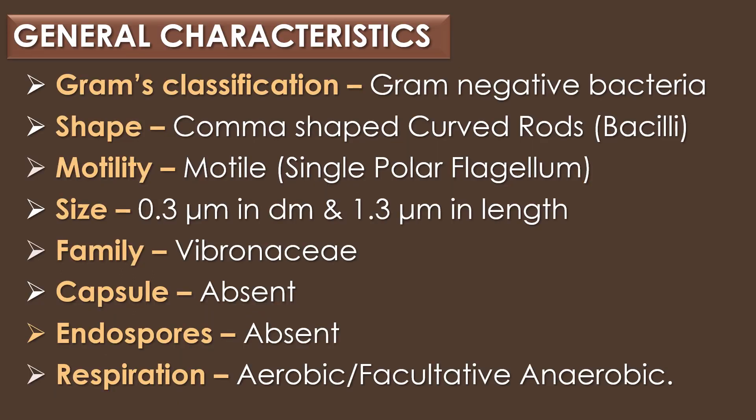First, general characteristics of Vibrio cholerae. Vibrio cholerae is a gram-negative, comma-shaped curved rod and it is motile in nature due to the presence of a single polar flagellum. The size of Vibrio cholerae is 0.3 micrometre in diameter and 1.3 micrometre in length. It belongs to the family Vibrionaceae, and capsules are absent, and endospores are also absent.